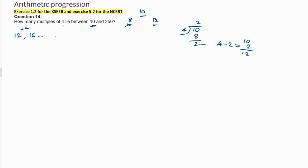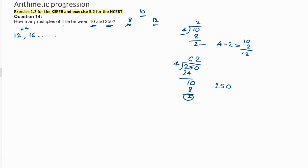Now the last term is very important. The last number given is 250. Divide 250 by 4: 4 goes into 24 is 6, bring down 10, 4 into 8 is 2, remainder is 2. So we take 250 and subtract the remainder 2, giving 248. The last term is 248.